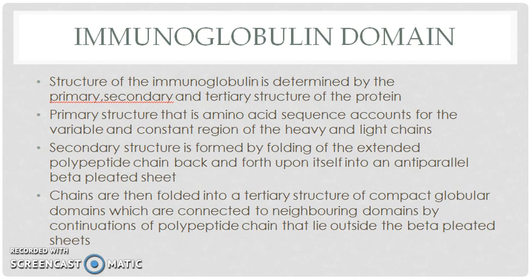The structure of the immunoglobulin is determined by primary, secondary, and tertiary structure of the protein. Primary structure — that is the amino acid sequence — accounts for the variable and constant region of the heavy and light chain. Secondary structure is formed by folding of the extended polypeptide chain back and forth upon itself into an anti-parallel beta-pleated sheet.